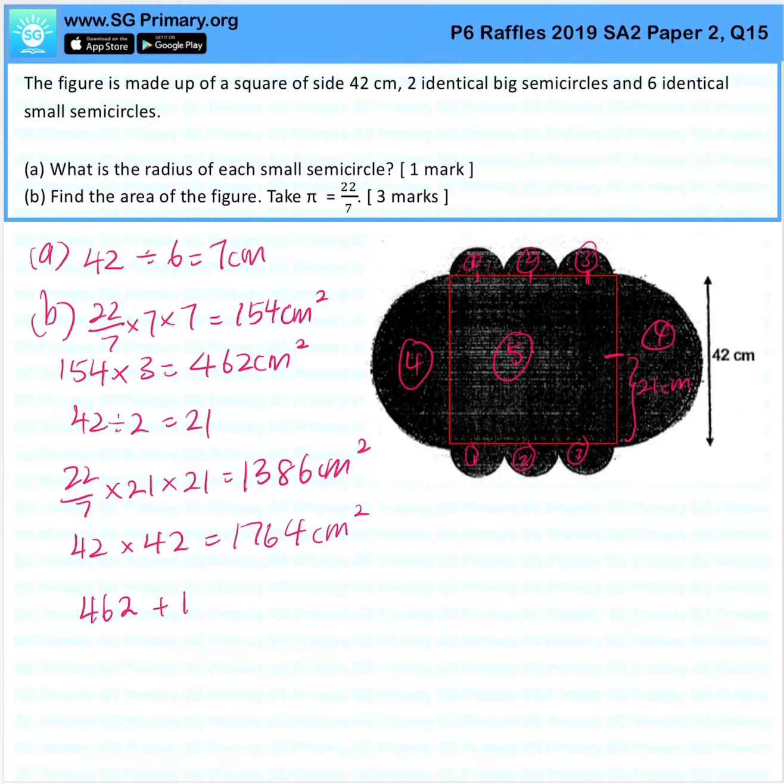462 plus 1386 plus 1764 will give us 3612 cm².